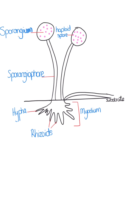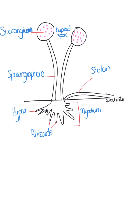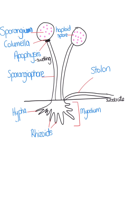The stolon is a horizontal hyphae. This helps the fungus to spread and also helps to secrete digestive enzymes. The columella is the base of the sporangium, and the apophysis is a swelling at the base of the sporangium.